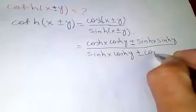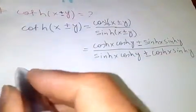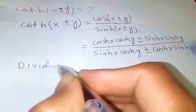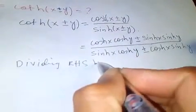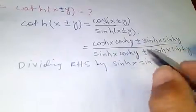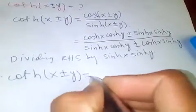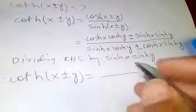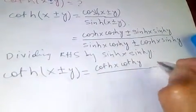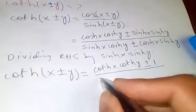The denominator expands as plus/minus cosh(x)sinh(y). Now dividing the right-hand side — both numerator and denominator — by sinh(x)sinh(y). We get coth(x ± y) equals coth(x)coth(y) plus/minus one...